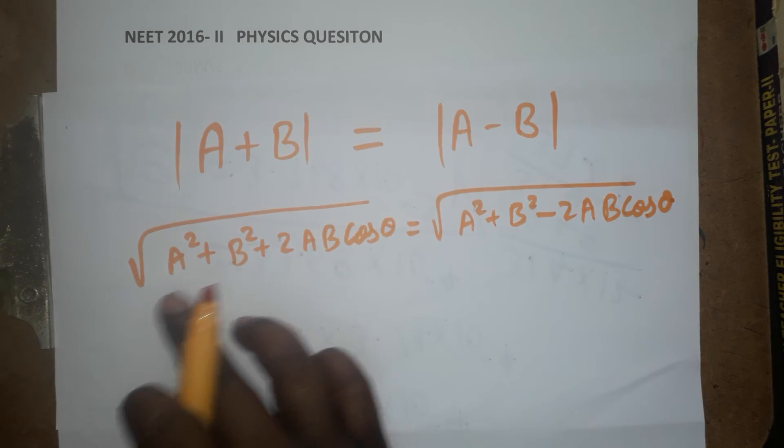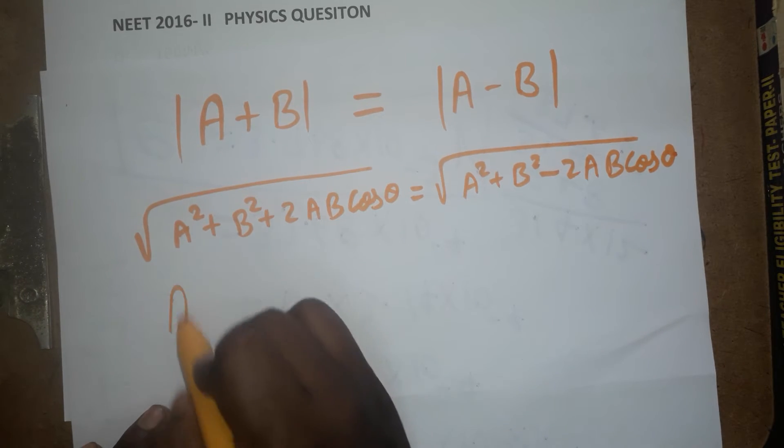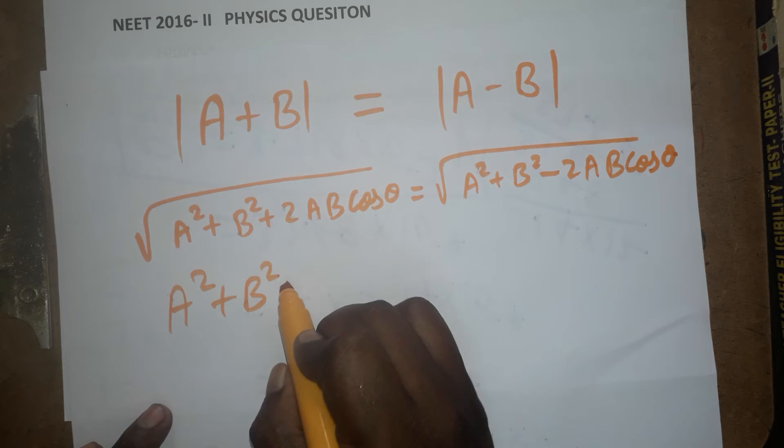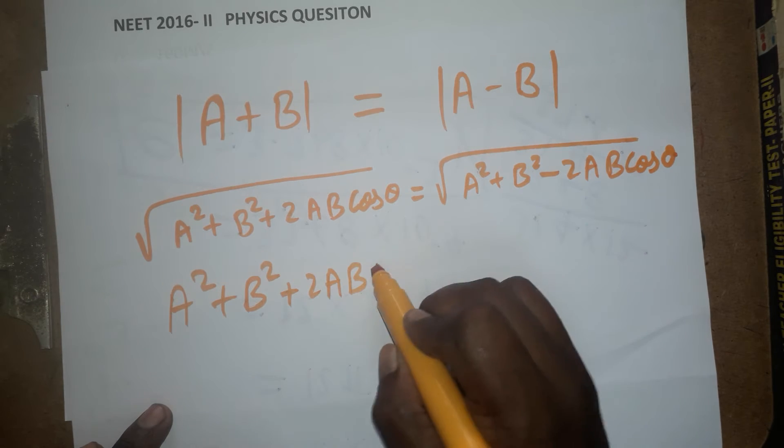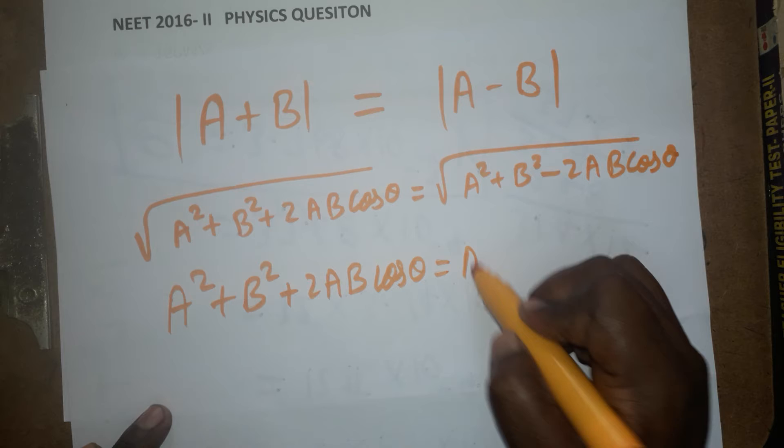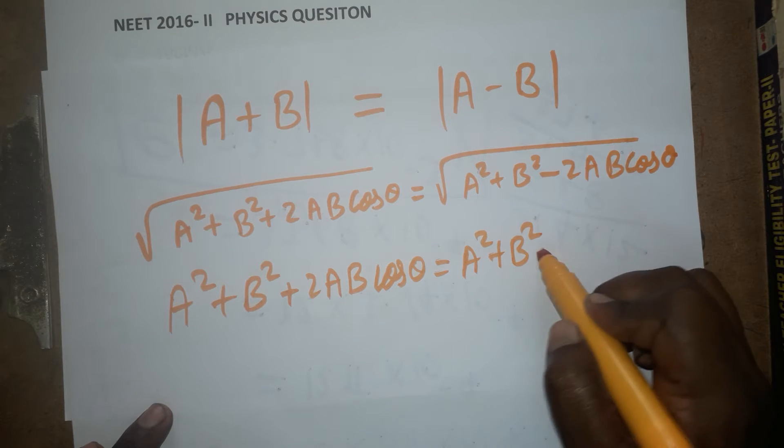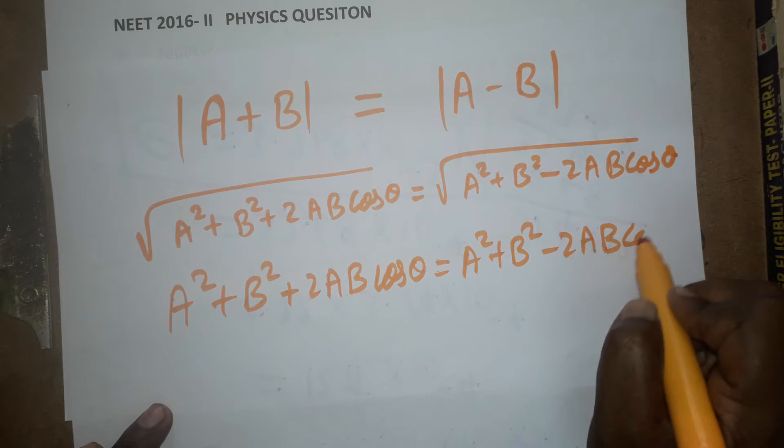They are asked what is the angle. Just square both the equations. So a square plus b square plus 2ab cos theta is equal to a square plus b square minus 2ab cos theta.